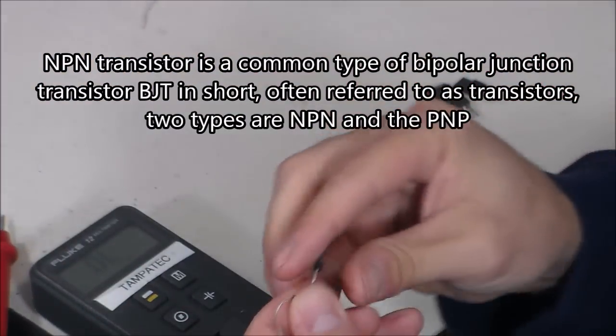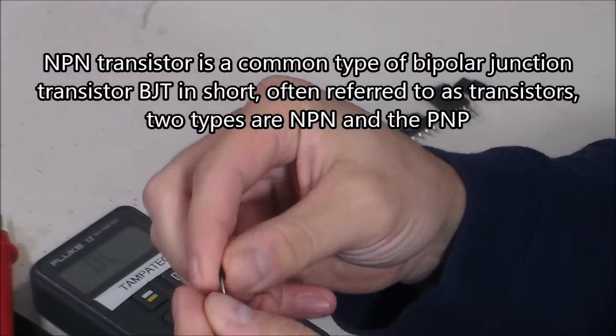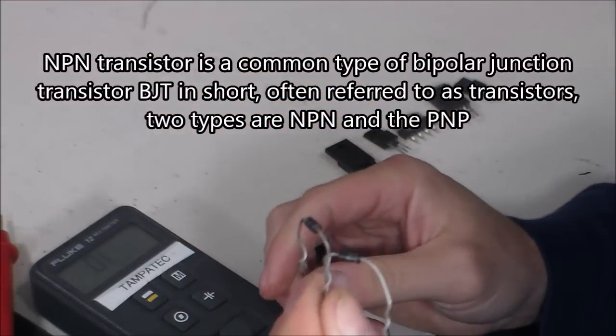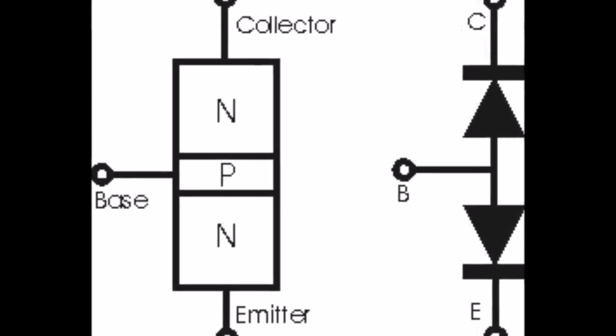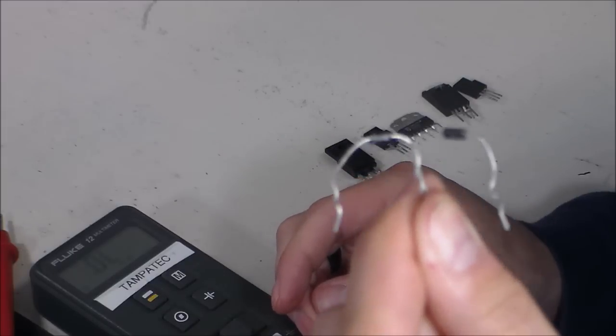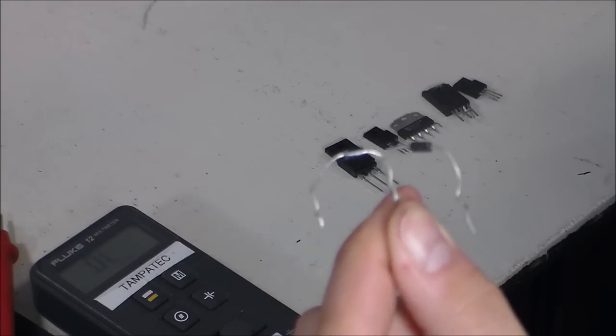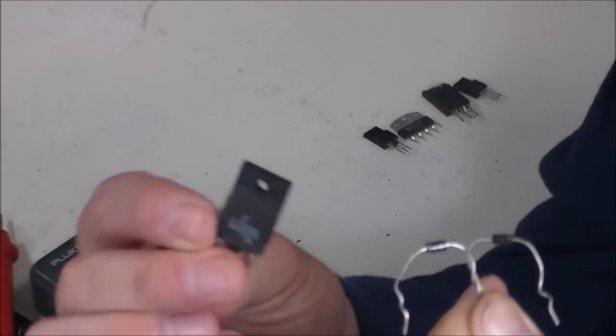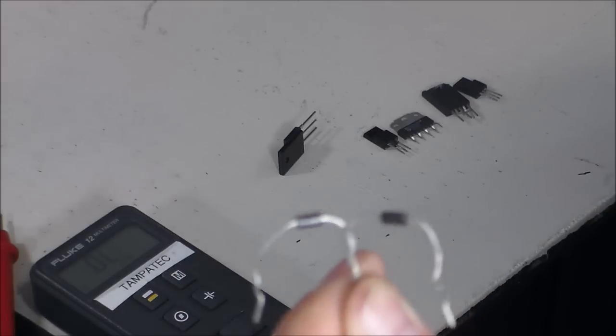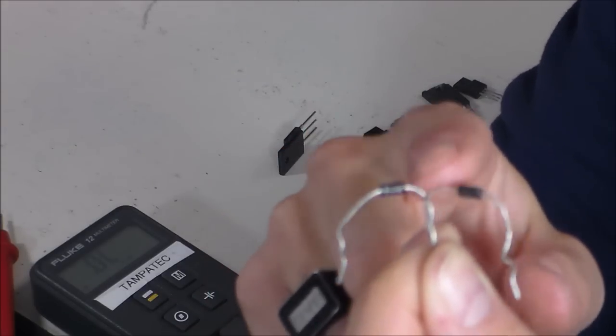A transistor, like an NPN transistor. NPN transistor, negative, positive, negative, is similar to two diodes intertwined, like that. But you can't actually put this in circuit. You won't get a transistor reaction in the circuit if you do this, because there's more to this transistor than just twisting two diodes together. But this is pretty much similar to a transistor. An NPN transistor, negative, positive, negative.